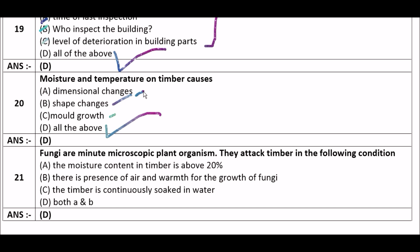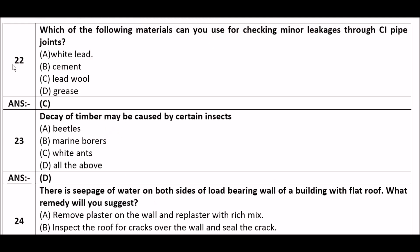Next question: Fungi are minute microscopic plant organisms. They attack timber under the following conditions — option A: the moisture content in timber is above 20%, option B: there is presence of air and warmth for the growth of fungi, option C: timber is continuously soaked in water, option D: both A and B. The right answer is option D — both A and B: moisture content above 20% and presence of air and warmth.